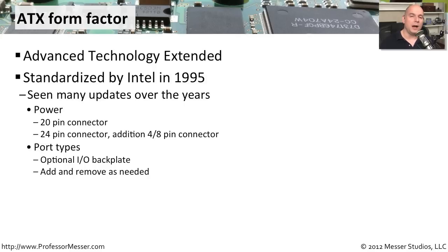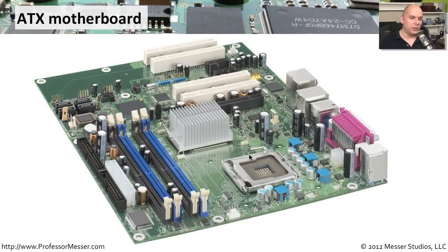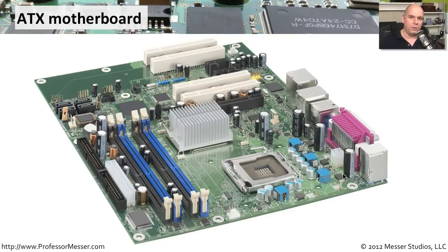ATX motherboards also give you options for what interfaces are available on the back, with a back plate that you can remove and replace depending on what ports you want. This is a very standard motherboard available for purchase today, and it's likely to remain available for many years. Looking at a common ATX motherboard, you can see it's quite large — designed for a desktop. It has a number of PCI card slots and adapter card connections for additional capability, a CPU slot, memory slots, and a 24-pin power connection on the edge. On the other side are the rear-facing interfaces. If you need lots of upgrade options for a desktop, this is a very good motherboard type.